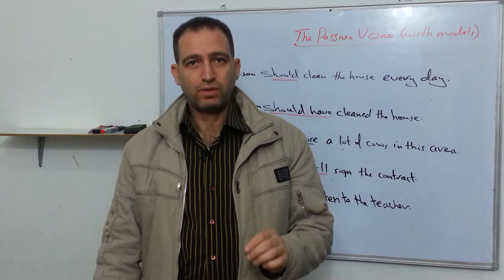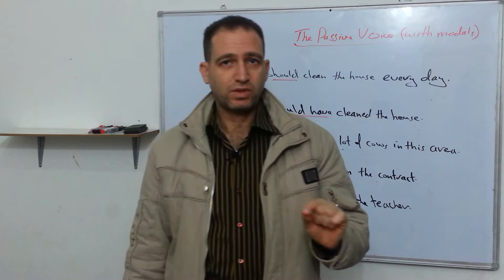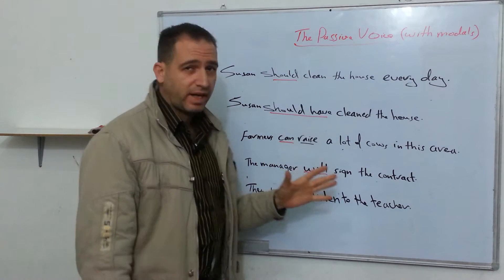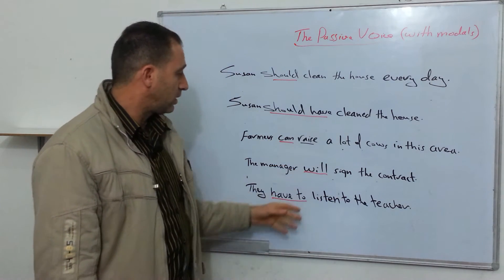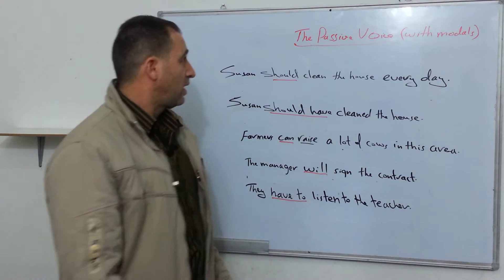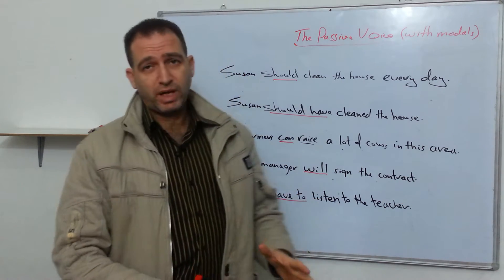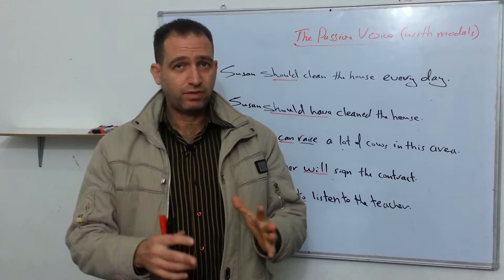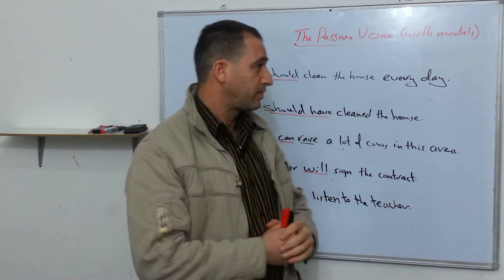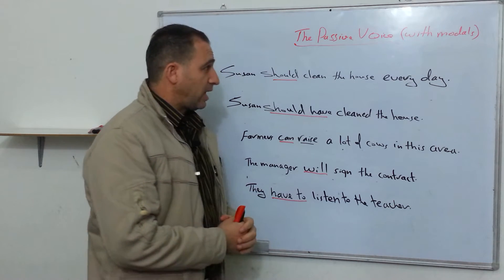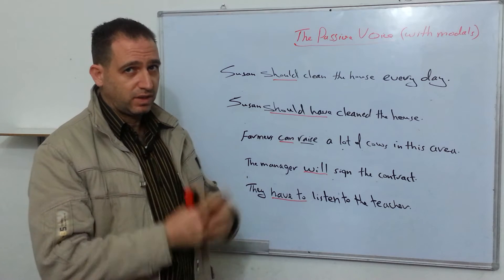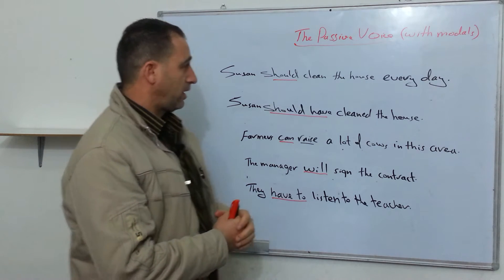Today I want to talk about the passive voice regarding modal verbs. Modal verbs are words like should, can, will, have to, might, may, must, stuff like that. I hope that you go back to my old video — I have a video about the passive voice in general. You can go back to it, and actually you have to, because I have a lot more explanation and simplification of this whole thing.